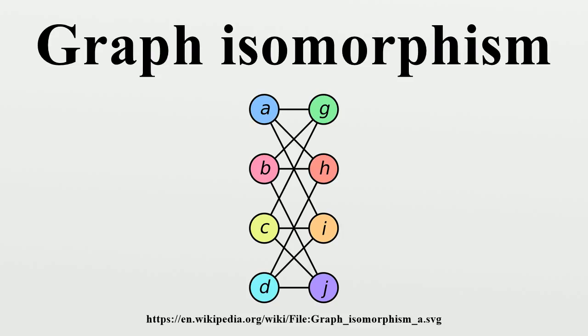In the case when the bijection is a mapping of a graph onto itself, i.e., when G and H are one and the same graph, the bijection is called an automorphism of G.